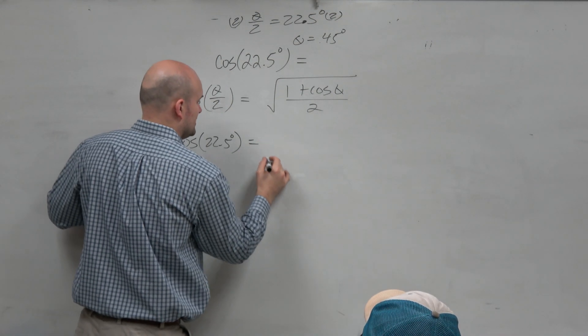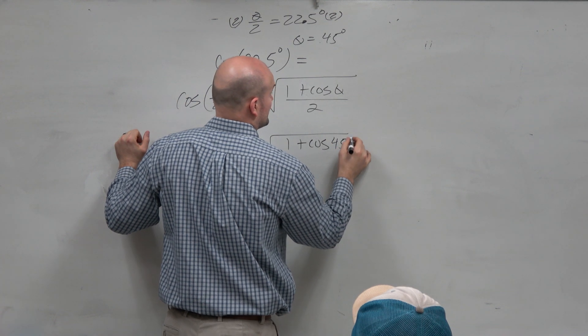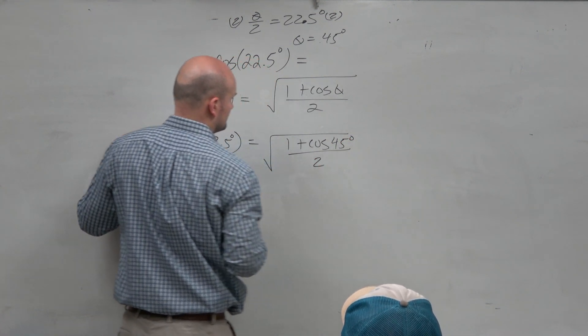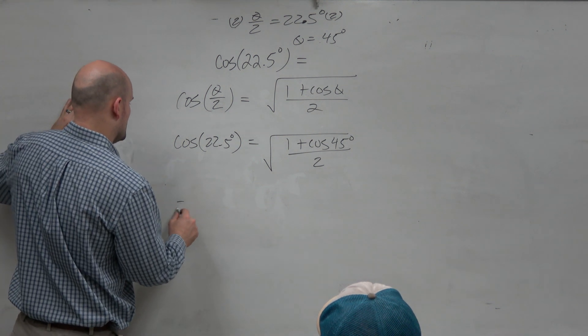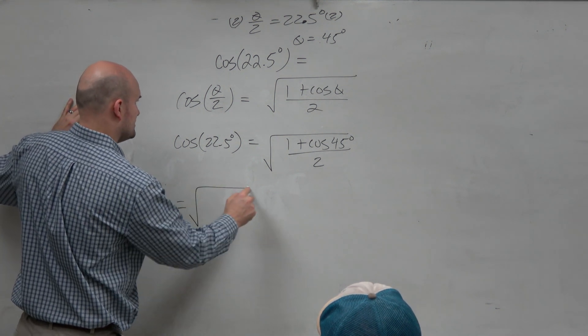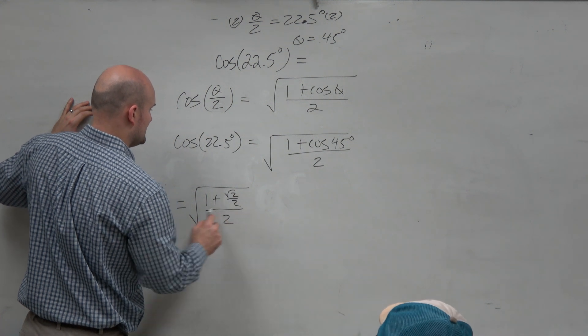So now, let's plug it in. Well, it's already divided in half for you. Yeah, it's already divided in half. So now, let's go ahead and rewrite this as 1 plus the square root of 2 over 2 divided by 2.